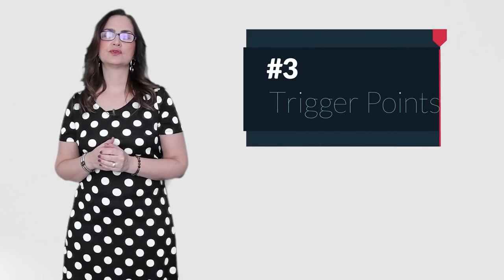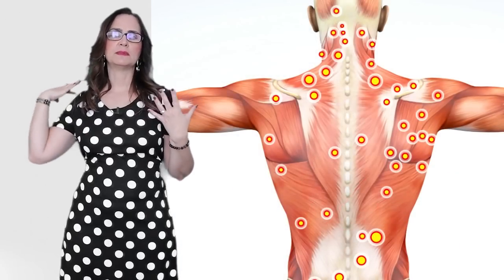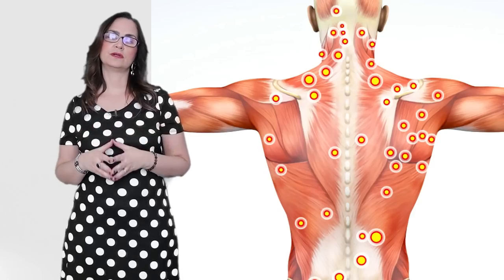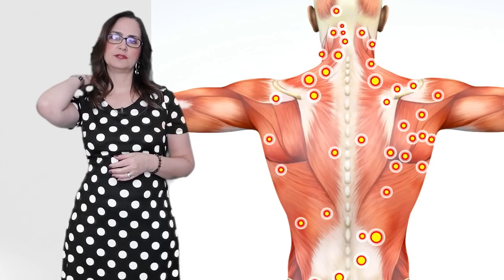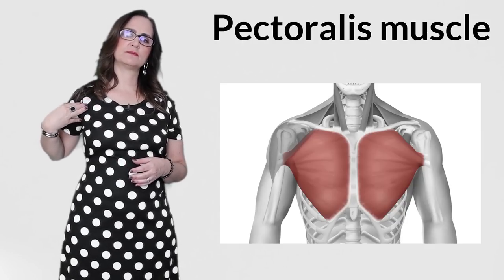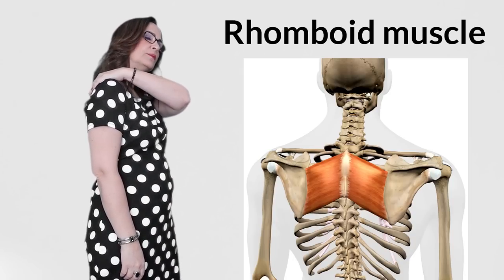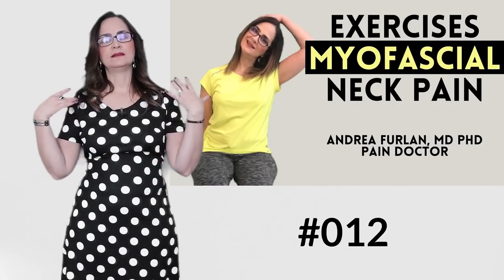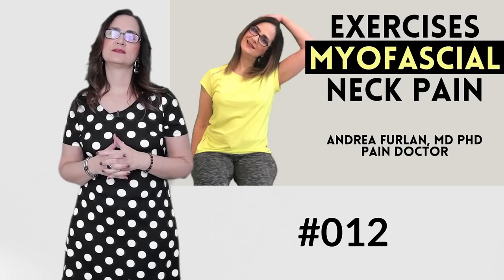A third cause of shoulder pain is trigger points in the myofascial for myofascial pain syndrome. As you see there are many muscles around the shoulder and if they have trigger points the person may feel pain to the shoulder area. Sometimes on the top of the shoulder like here in the trapezius area or in the front of the shoulder mainly caused by pectoralis muscle trigger points or in the back of the shoulder which could be rhomboids muscles or infraspinatus muscles. Watch my video 12 of exercises for myofascial pain of the neck and shoulder muscles where I demonstrate SSAR exercises for this condition.